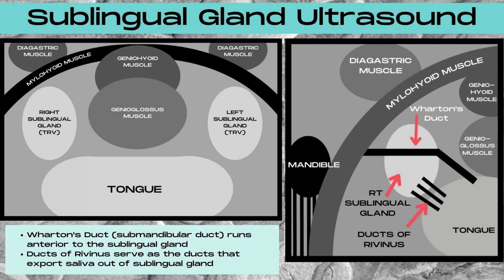Now let's look at the sublingual glands on ultrasound. On the image to the left, if the transducer is placed in a transverse plane below the chin bone and then angled up towards the tongue, you can visualize the hyperechoic tongue in the bottom portion of the image and the genioglossus and geniohyoid muscles anterior to the tongue. There's going to be a dark circular stripe on the ultrasound image — this is the mylohyoid muscle — and below this muscle, sandwiched between the mylohyoid muscle and the geniohyoid and genioglossus muscles, are going to be the right and left sublingual glands.